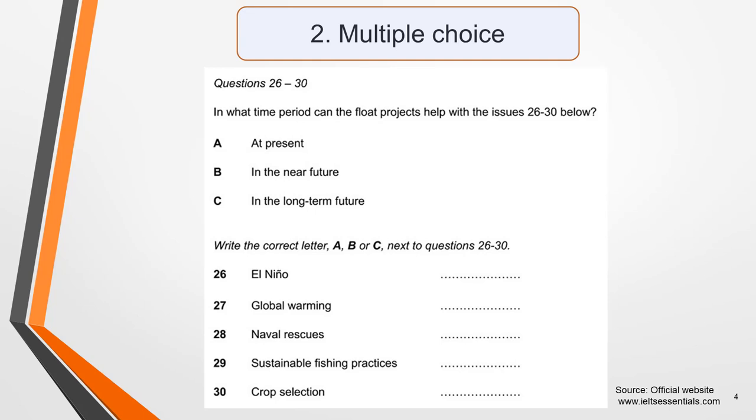In this sample test, the answers to questions 26 to 30 are either options A, B, or C. Again, expect synonyms and paraphrasing. For example, the speaker might say soon rather than in the near future.